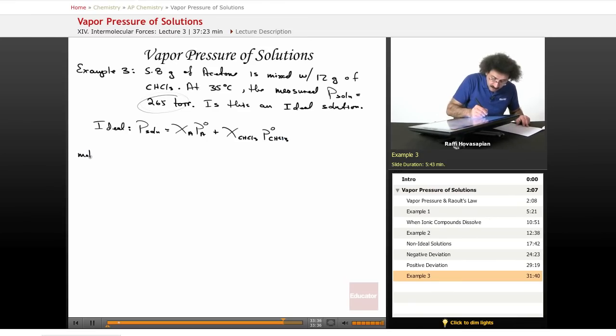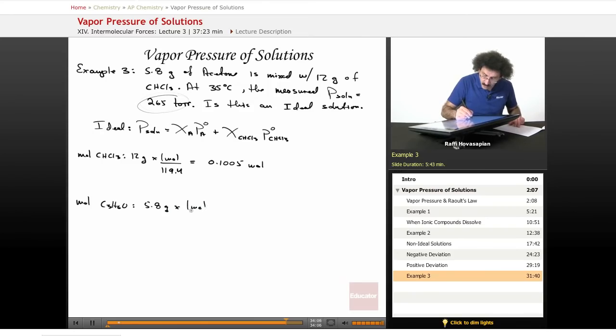We have 12 grams, and one mole of that is equal to 119.4, which equals 0.1005 mole. And then moles of C3H6O, that's the acetone, we have 5.8 grams times one mole, which is 58.1 grams, and we get 0.0998 mole.